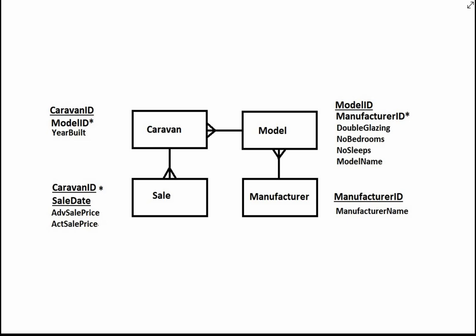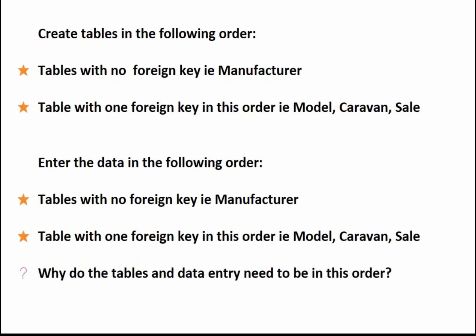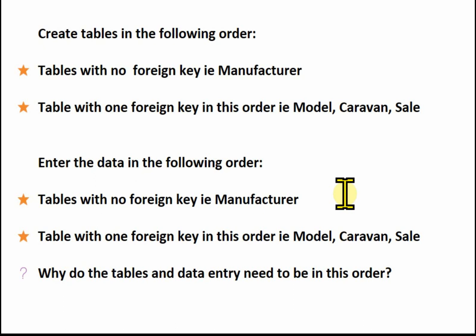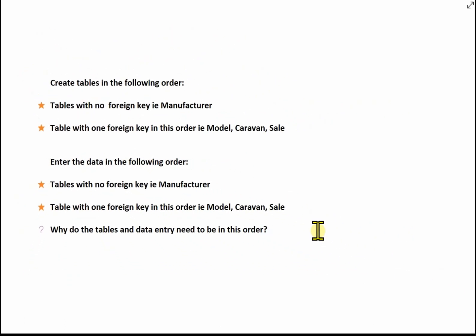We're going to be working from the design done in the previous video. We need to create tables in the following order: first, tables with no foreign key — so manufacturer first. Then tables with one foreign key — model, then caravan, then sale. When entering data, you also need to follow that same order, entering manufacturer data first. The reason is we need primary keys in place before we can reference them as foreign keys.